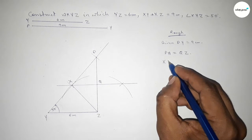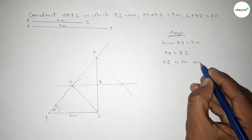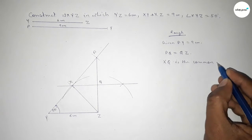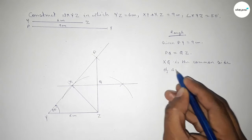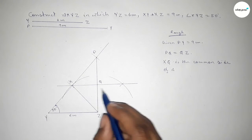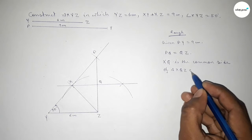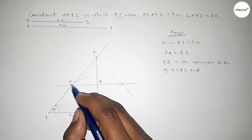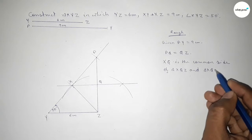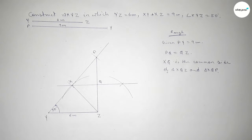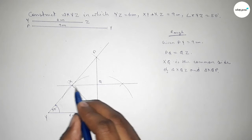XQ is the common side of the two triangles XQZ and XQP. By the perpendicular bisector theorem, the triangles XQZ and XQP are congruent by side-side-side.